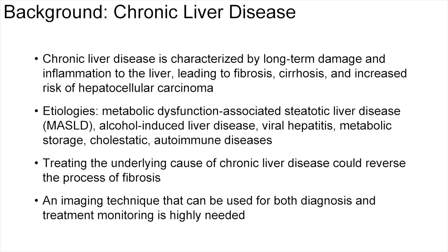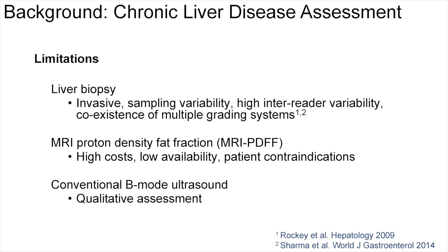Chronic liver disease is characterized by long-term damage and inflammation to the liver, leading to fibrosis, cirrhosis, and increased risk of hepatocellular carcinoma. Many etiologies include metabolic dysfunction-associated steatotic liver disease, alcohol-induced liver disease, and viral hepatitis. As treating the underlying cause of chronic liver disease could reverse the process of fibrosis, liver biopsy for histological assessment is invasive and limited by sampling variability, high interreader variability, and the coexistence of multiple grading systems, making it imprecise and challenging for longitudinal monitoring.